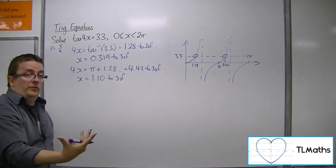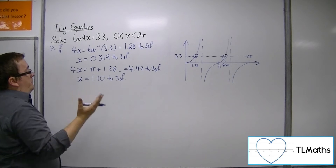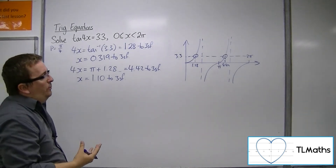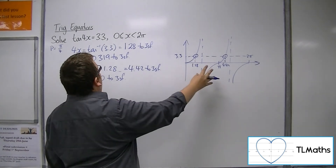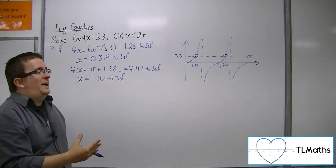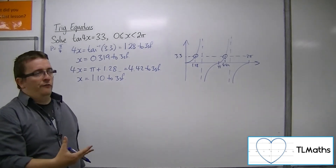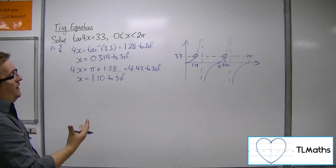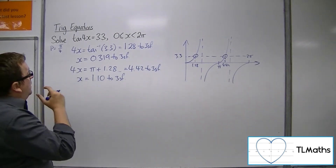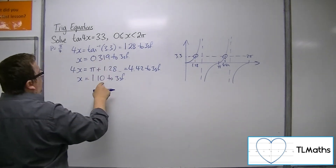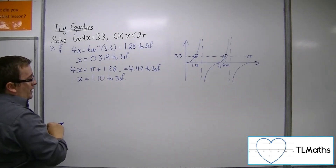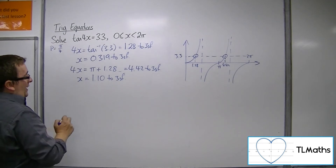Because I've divided both sides by 4, the period is now pi over 4. I was originally expecting two solutions for tan x equals 3.3 between 0 and 2 pi, so I would now be expecting eight solutions for tan 4x, because I would be able to fit in four times as many solutions. I need to add pi over 4 to this value and keep adding it on to get the remaining six solutions.